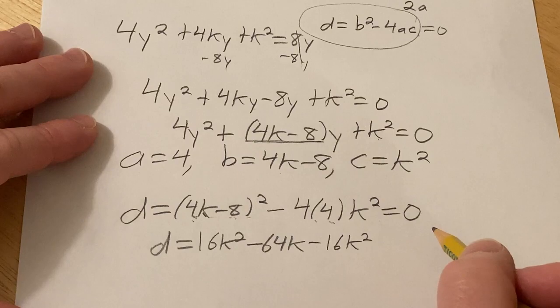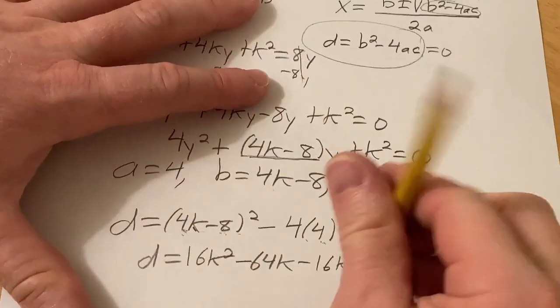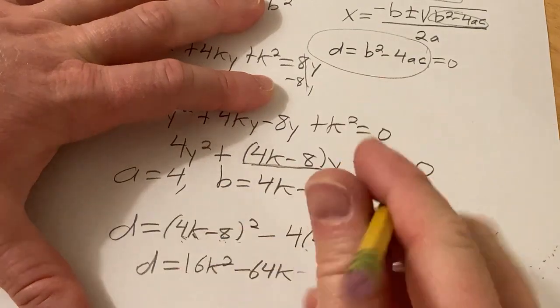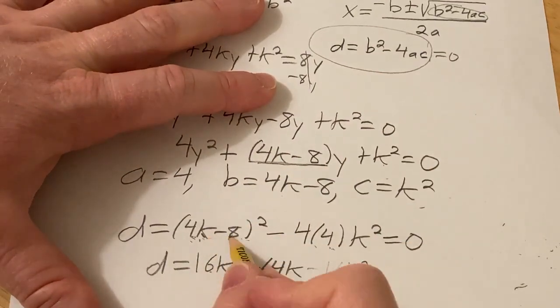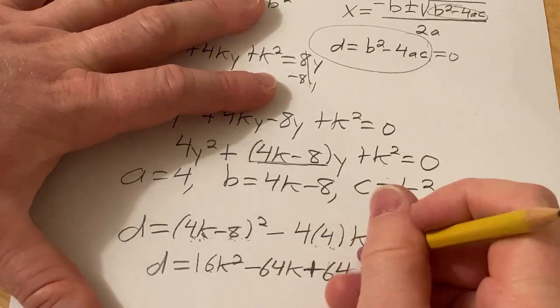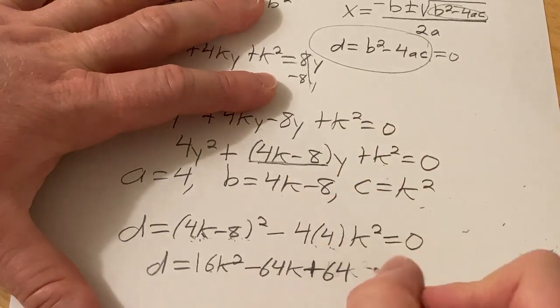Because 4 times 4 is 16. Oh, I forgot the plus 64, right? So you square this one, multiply these and double them, square this one, that gives you plus 64, and then minus 16k².